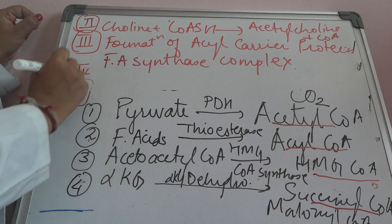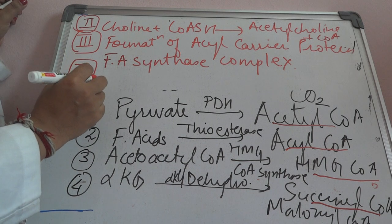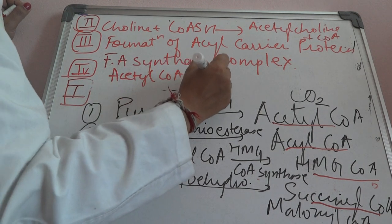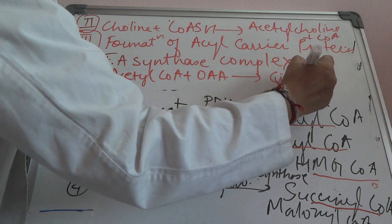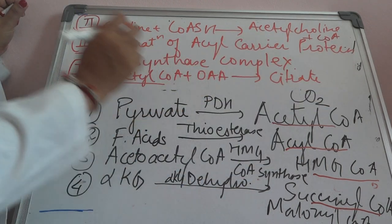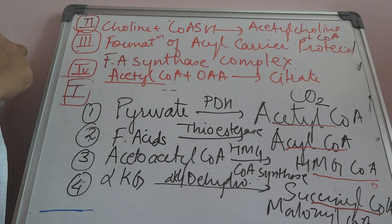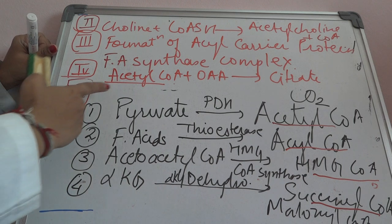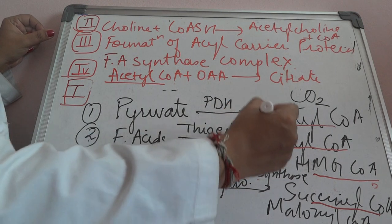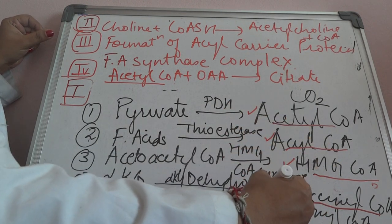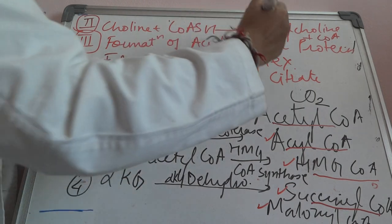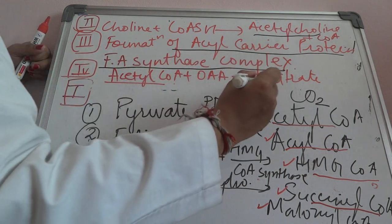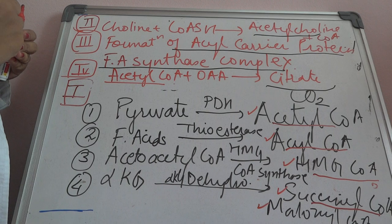The fourth function is the formation of citrate. Acetyl-CoA plus oxaloacetate will form citrate. This is the entry of acetyl-CoA into the tricarboxylic acid cycle. In summary, the important functions include: formation of different CoAs, formation of acetylcholine, being part of the acyl carrier protein and fatty acid synthase complex, and forming citrate to enter the TCA cycle.